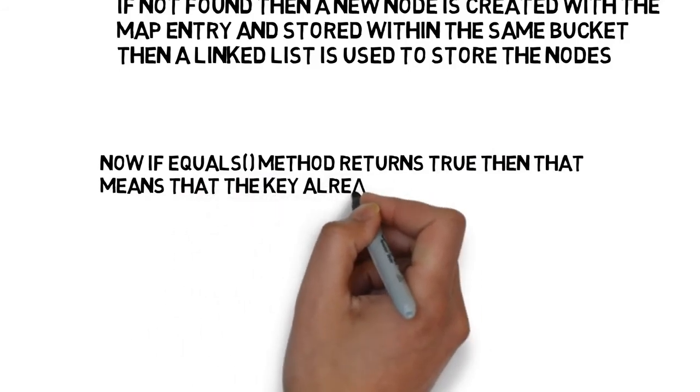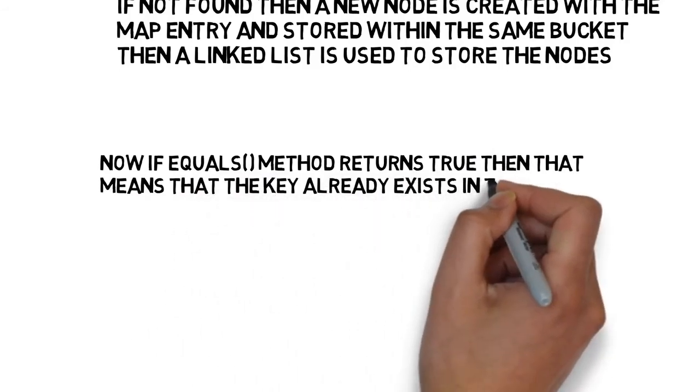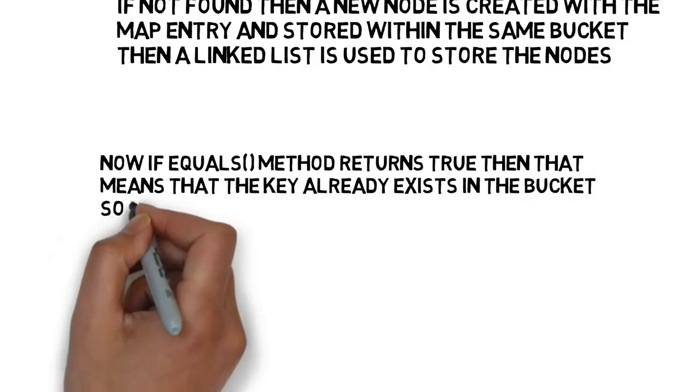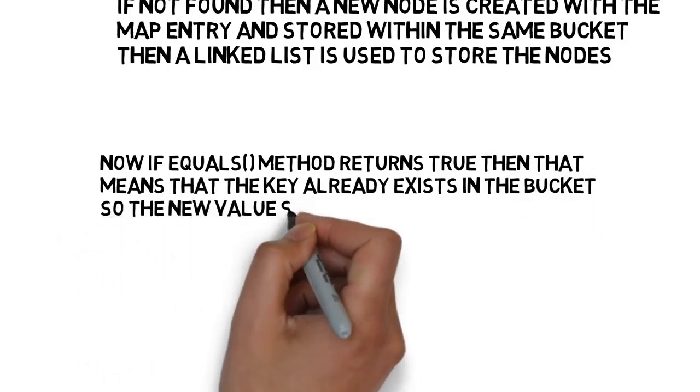Now if equals method returns true then that means the key already exists in the bucket. So the new value should overwrite the old value for the match key.